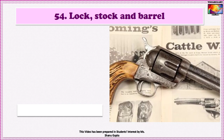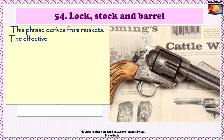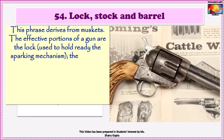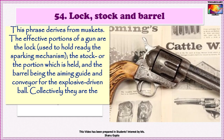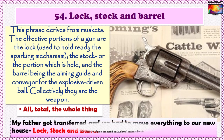A similar idiom is 'Lock, stock and barrel.' This phrase derives from muskets. The effective portions of a gun are the lock — used to hold ready the sparking mechanism — the stock or the portion which is held, and the barrel being the aiming guide and conveyor for the explosive driven ball. Collectively, they are the weapon, therefore everything. The idiom means all total, the whole thing. An example sentence is: 'My father got transferred and we had to move everything to our new house, lock, stock and barrel.'